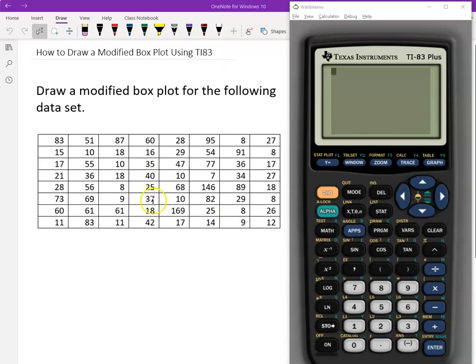Here is the data. We have 64 data points. So we need to modify the box plot. Let's go to input the data into a calculator first.